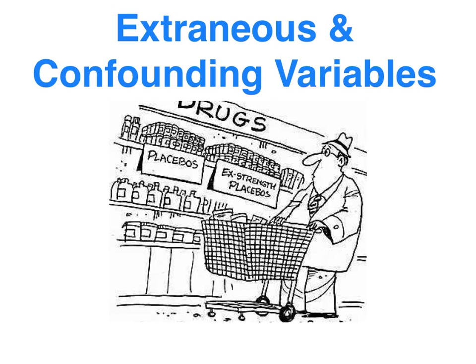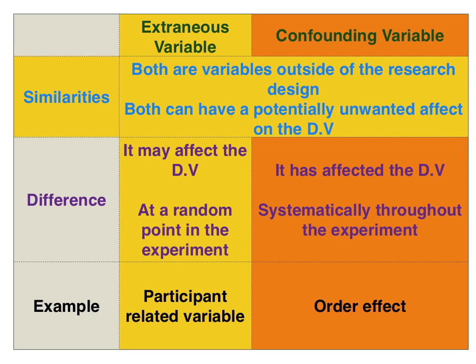Before I start talking about the placebo and experimenter effect, I just want to quickly go over the concepts of extraneous and confounding variables. In terms of what an extraneous and a confounding variable have in common, they're both variables outside of the research design that have a potentially unwanted effect on the dependent variable.